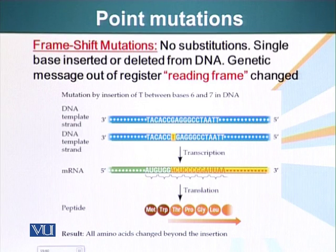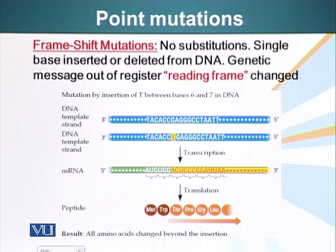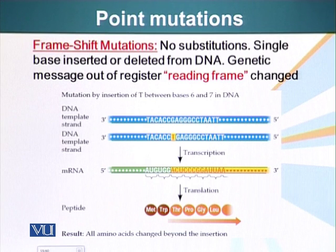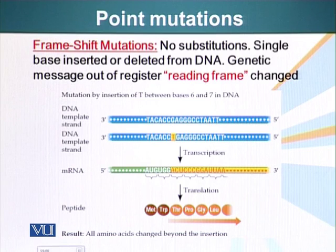Frameshift mutations arise because codons are sets of three nucleotides, and the ribosome reads three nucleotides at a time. If there is an addition or deletion of a single nucleotide, the whole reading frame is altered. New codons basically appear — changed from the original version — and all the amino acids incorporated in the protein will be different from the ones which were originally coded, so it can also have a very dramatic effect.